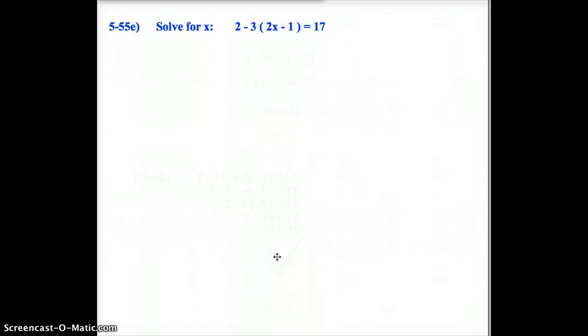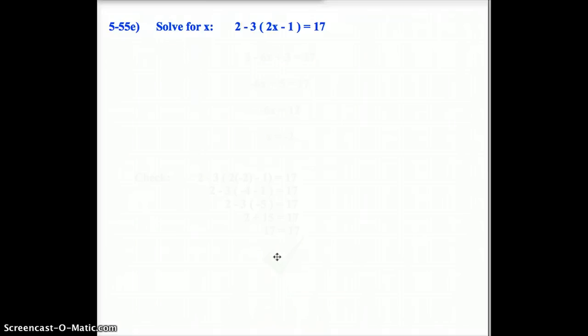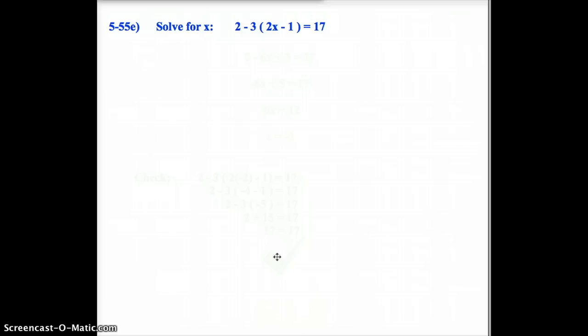So let's take a look at problem 55, letter E. There's A through J in here. You'll be doing all of them. But I will do a couple of these with you. So letter E. So we've got 2 minus 3 times the sum of 2x minus 1 equals 17.